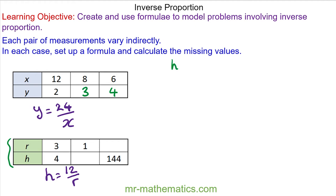We'll use this model to find the value of h when r is equal to 1. So h is equal to 12 divided by 1, which gives h is equal to 12.